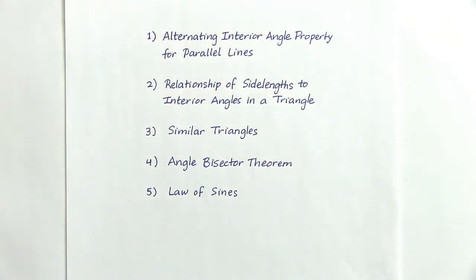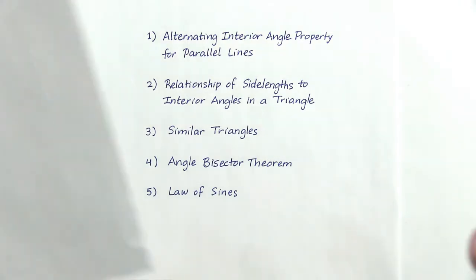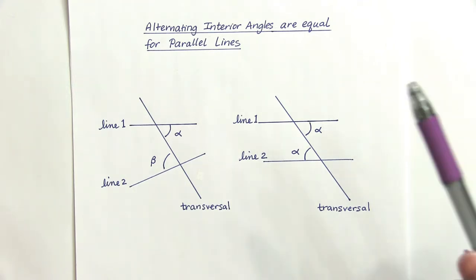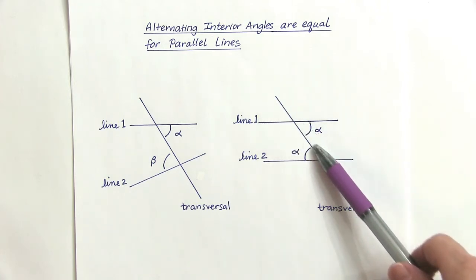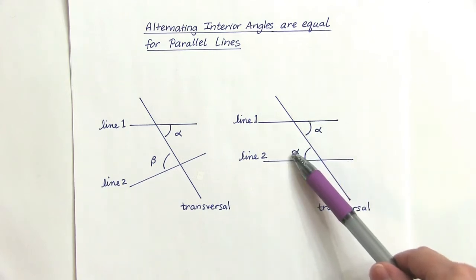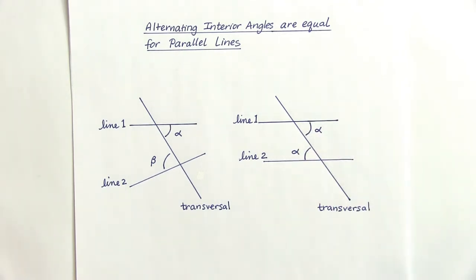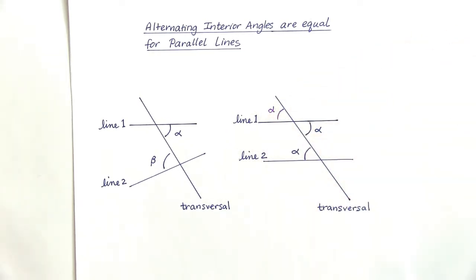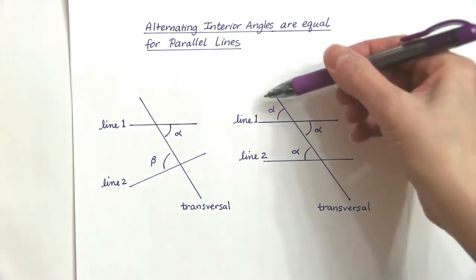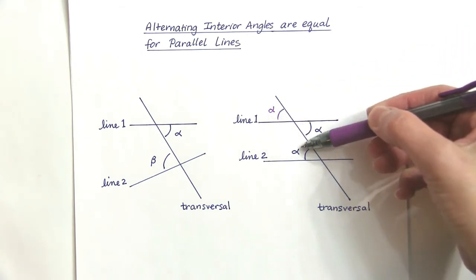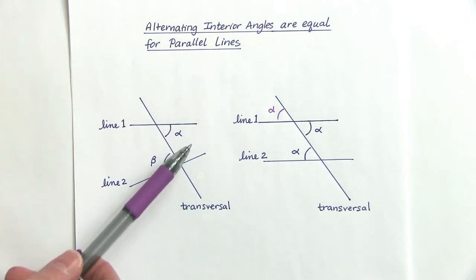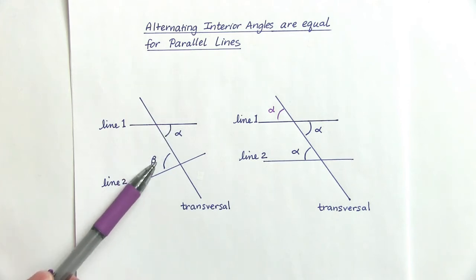The first of these properties is the alternating interior angle property for parallel lines. If two lines are parallel and we have one transversal, then the alternating interior angles must be equal — this follows because vertically opposite angles are equal. Notice that if the two lines are not parallel, the alternating interior angles will not be equal.